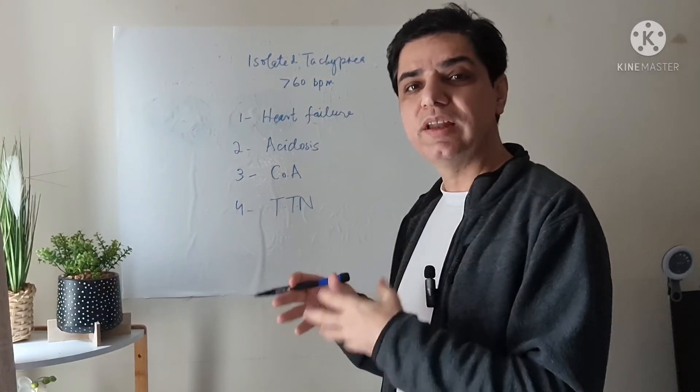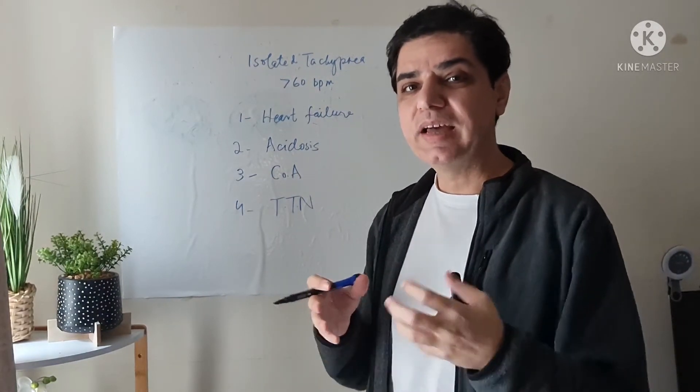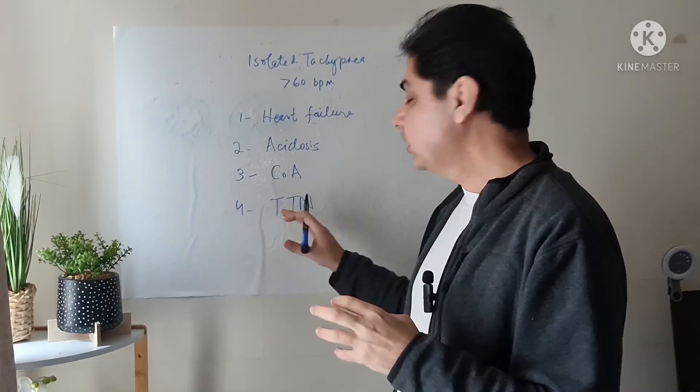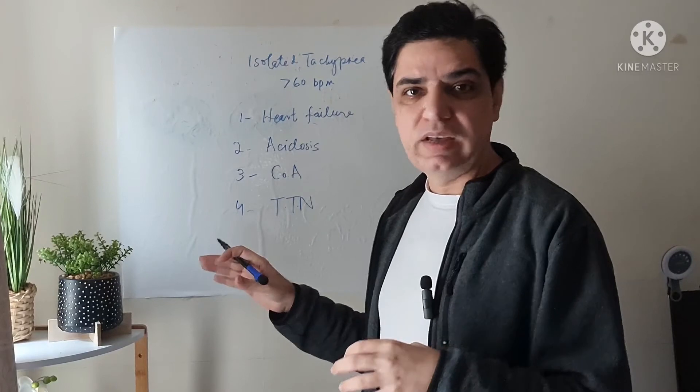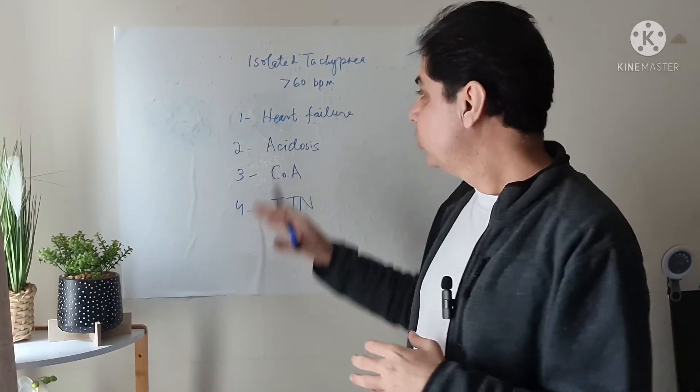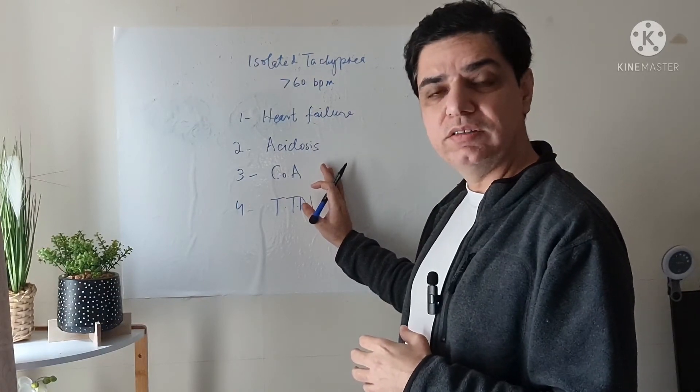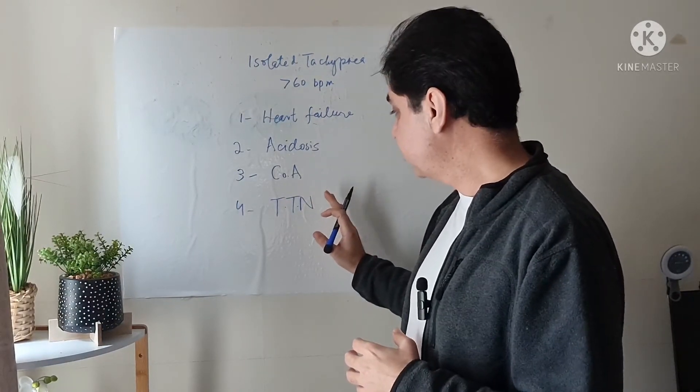There has been a bit of fluid in the lungs which takes a bit of time to clear up. That fluid retention inside the lung can give you tachypnea for a few hours. As the fluid is reabsorbed, the tachypnea is resolved. So heart failure, acidosis, missed congenital heart disease especially coarctation of aorta, and transient tachypnea of the newborn are important differentials.